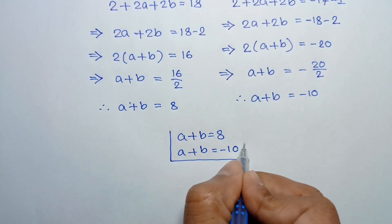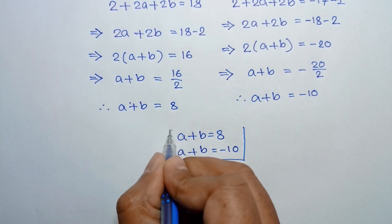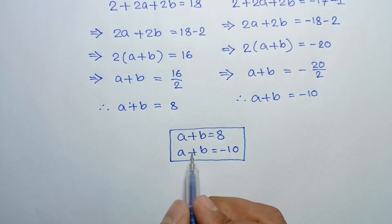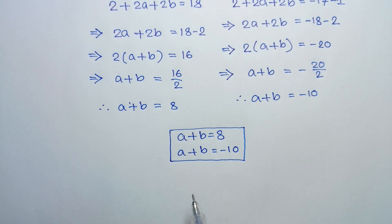So, these are the two values of a plus b: a plus b equals 8, or a plus b equals negative 10. If you like this video, please subscribe to my channel. Thanks for watching.